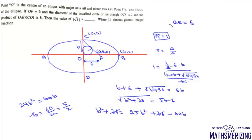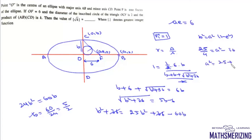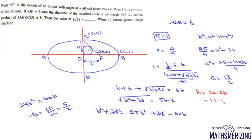Now we use b² = a²(1 - e²), so b² = 25/4. We also know ae = 6, and b² = a² - a²e² = a² - 36, giving a² = b² + 36 = 25/4 + 36 = 169/4, so a = 13/2. Therefore AB = 2a = 13 and CD = 2b = 5, so K = AB·CD = 13·5 = 65.